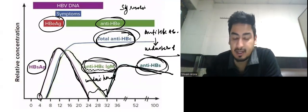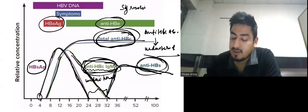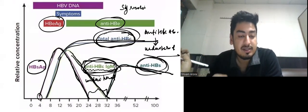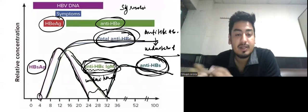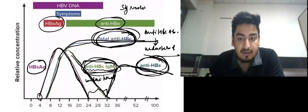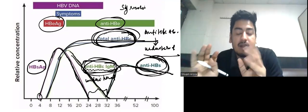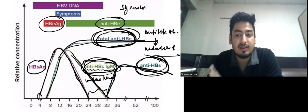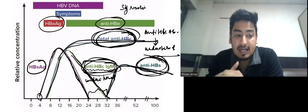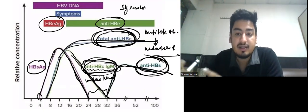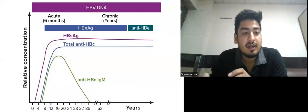This graph represents resolution: HBsAg appears then disappears, and there is appearance of anti-HBs. Total and IgM anti-HBc appear; IgM disappears after some time marking the end of the acute phase, while total anti-HBc remains. If a person has self-resolution of Hepatitis B, anti-HBs remains positive for lifetime and total anti-HBc is also positive for lifetime. So if a patient has anti-HBs positive, total anti-HBc positive, and HBsAg negative, that means the patient had Hepatitis B at some point and now has self-resolution. If IgM anti-HBc is also positive, the patient is in the acute phase.